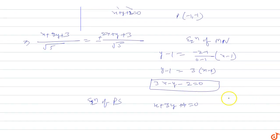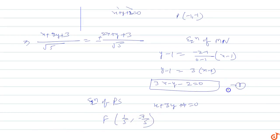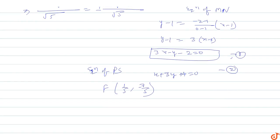The focus F (S) coordinates are found from the intersection of the two equations, giving F = (1/5, -7/5). This is equation one and equation two; from their intersection point we get the focus coordinates.